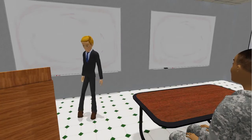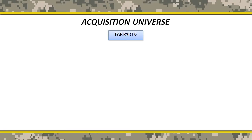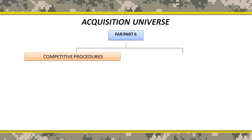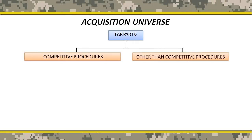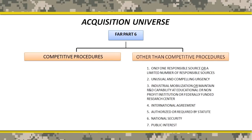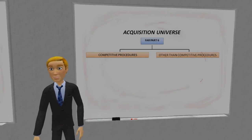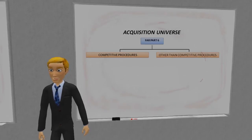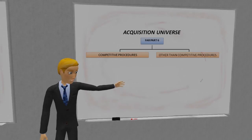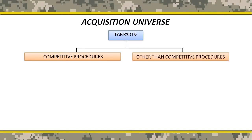Here is a simple overview of the federal acquisition landscape. Every acquisition of supplies or services by the government is going to use either competitive or other than competitive procedures. Competitive procedures are required by law to be used unless an acquisition meets at least one of seven circumstances listed under other than competitive procedures. If an acquisition meets any of these circumstances, other than competitive procedures can be used.